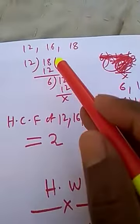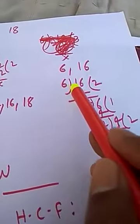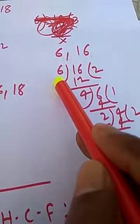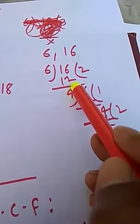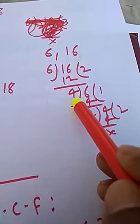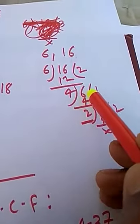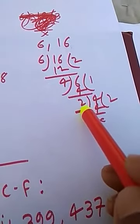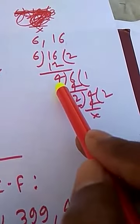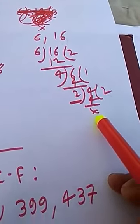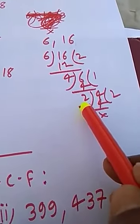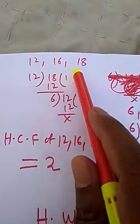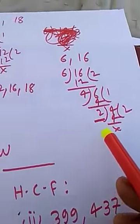Now we consider 6 and the third number 16. We divide 16 by 6: 2 times equals 12, remainder is 4. Now 4 will divide the divisor 6: 1 time equals 4, remainder is 2. Now 2 will divide the divisor 4: 2 times equals 4, remainder is 0. So the last divisor is 2, meaning the HCF of 12, 16, and 18 is 2.